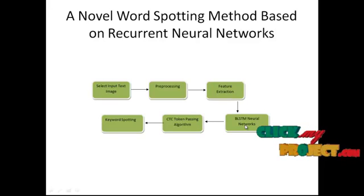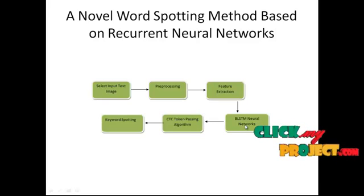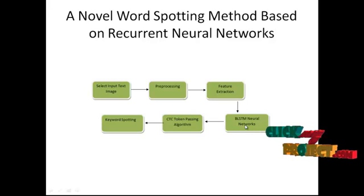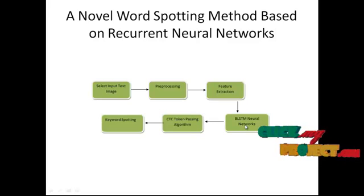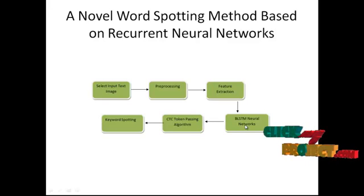In the neural network, the text line is processed from both left to right and right to left. This is done because context from both sides of a character is useful to improve the recognition. The information from two separate input layers is collected in two separate layers respectively and finally joined in the output layer.